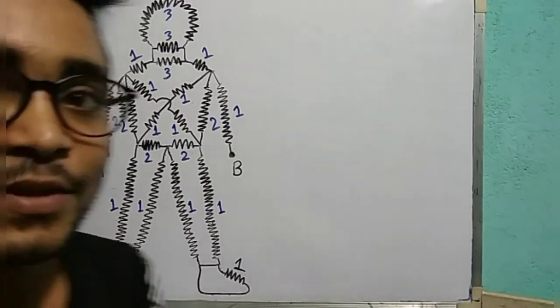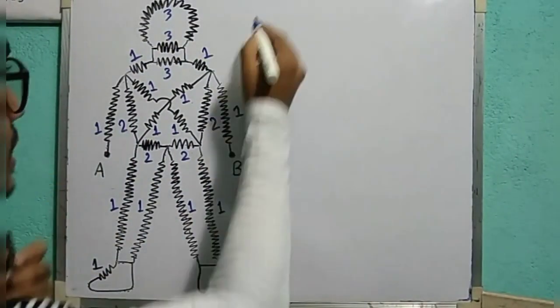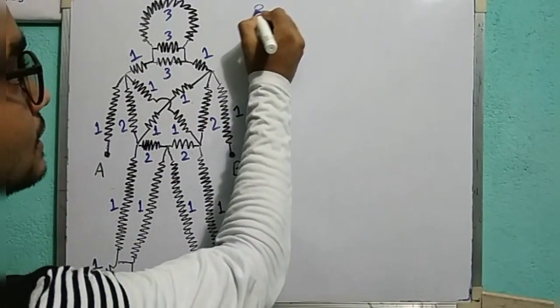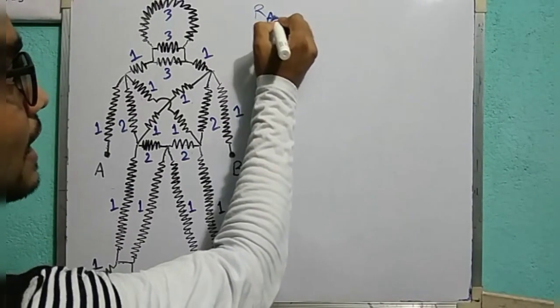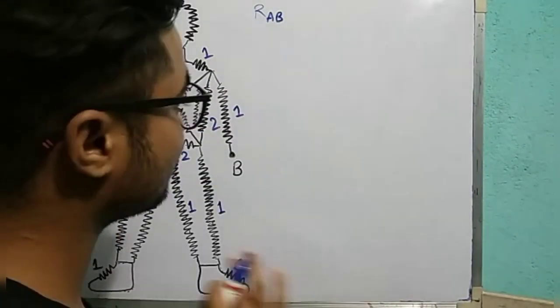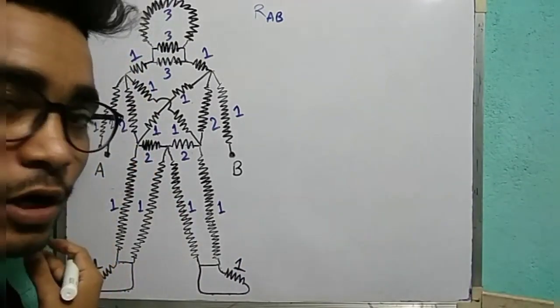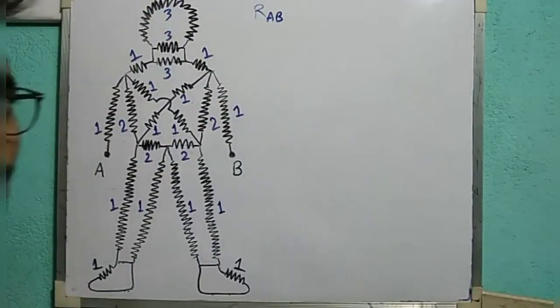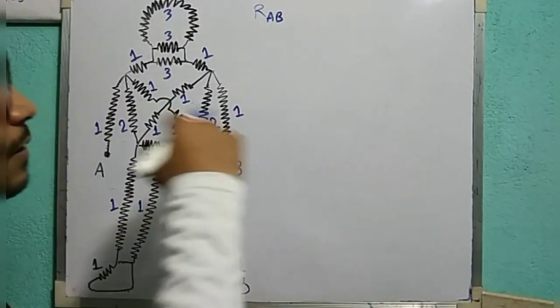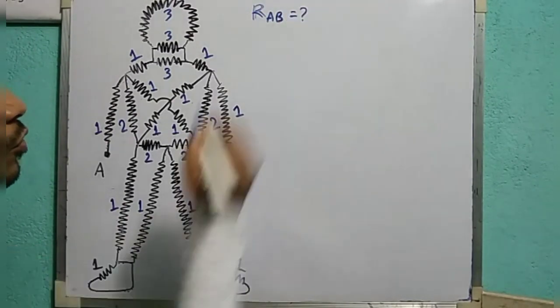So let's start. We say equivalent resistance RAB, or the equivalent resistance between points A and B. I'm going to go to A and check the picture. So RAB — we say equivalent resistance.